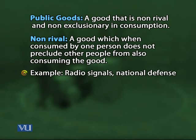Examples of non-rival goods include radio signals, national defense, highways, airports, fire protection, police, traffic signals, and street lights.